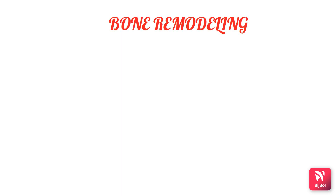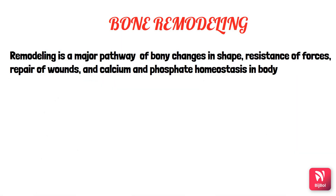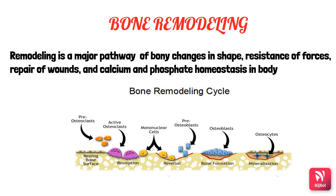Although alveolar bone is constantly changing its internal organization throughout life, it retains the same overall form from childhood through adult life. This is because of a balance between bone resorption and bone formation. This equilibrium is maintained by local and systemic factors. If there is any imbalance between bone resorption and bone formation, there will be changes in the morphology of the alveolar bone.